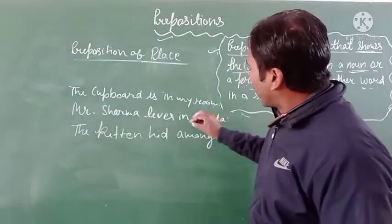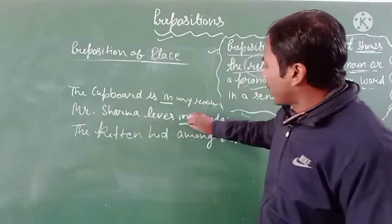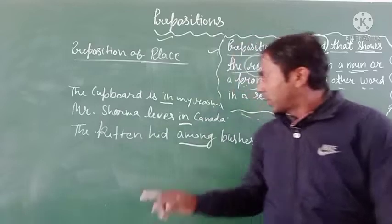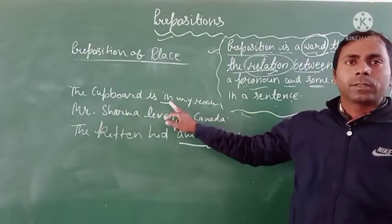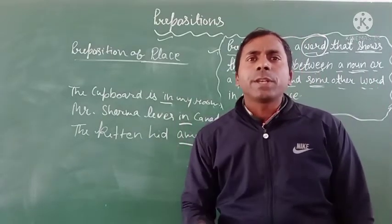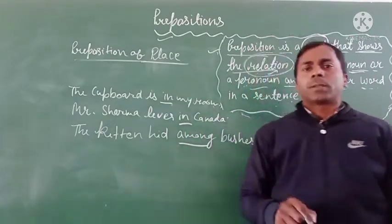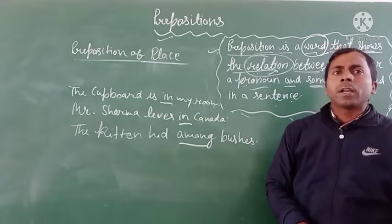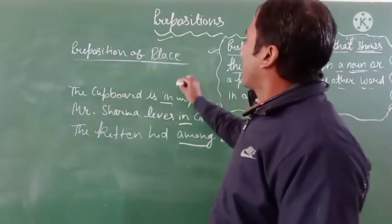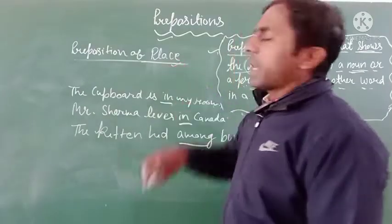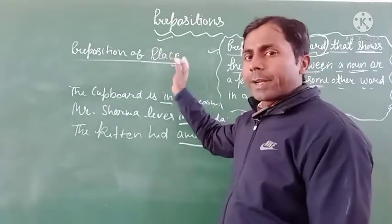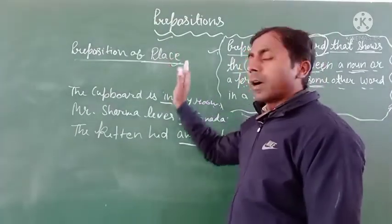You can see the words: in, in, among. These underlined prepositions in these sentences have been used to indicate position, so they are called prepositions of position — also called prepositions of place.